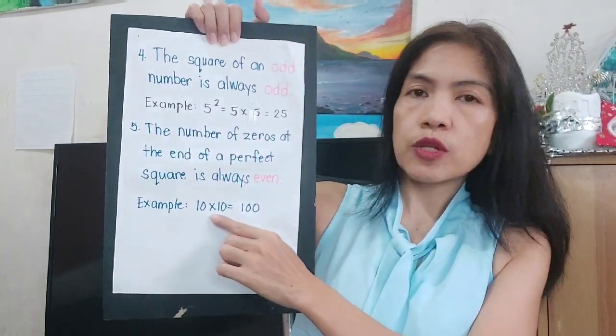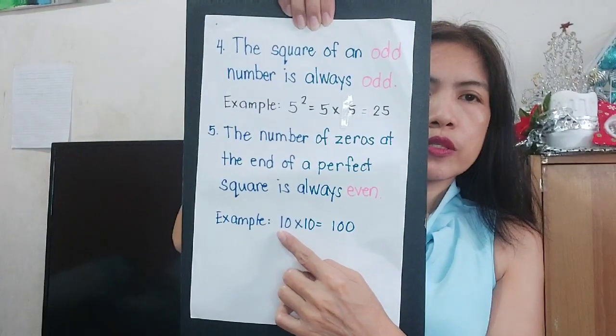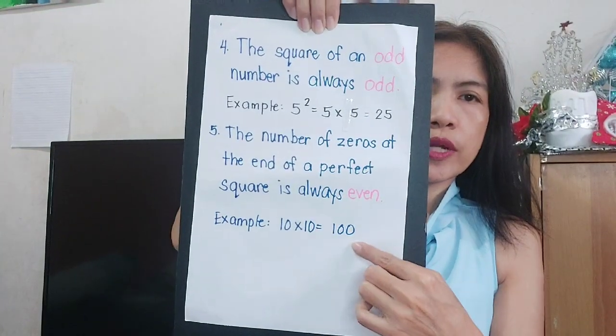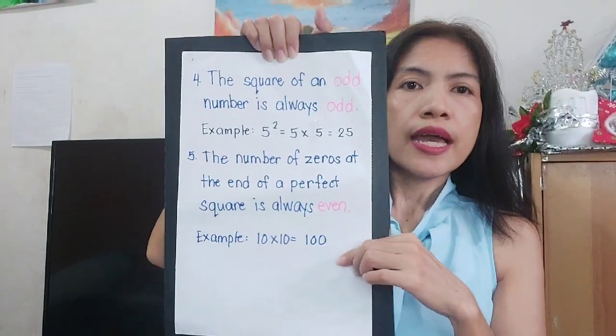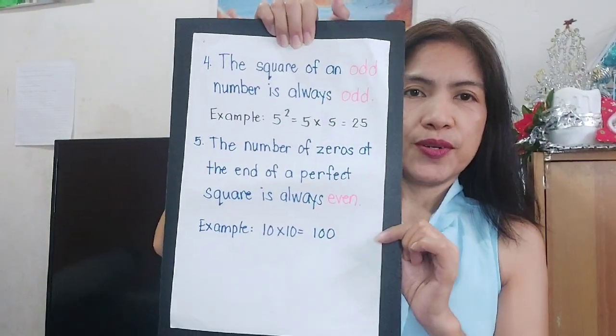And the number of zeros at the end of a perfect square is always even. For example, 10 squared is 100 — the zeros at the end are still an even count.